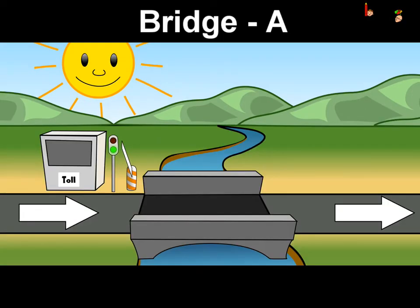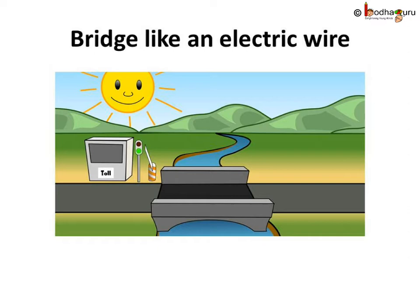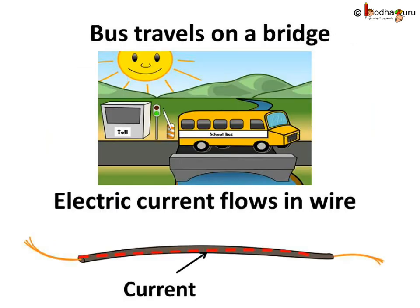Let's call this bridge A. You must be thinking, where does the bridge come into picture when we talk about electricity? So, here we can say, the bridge and the road on which the bus travels is like an electric wire. The bus moves on the bridge. Same way, something must be moving or flowing through the wire.